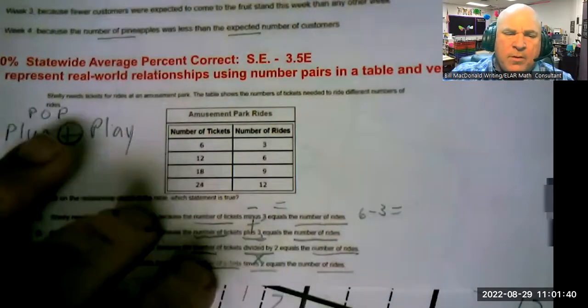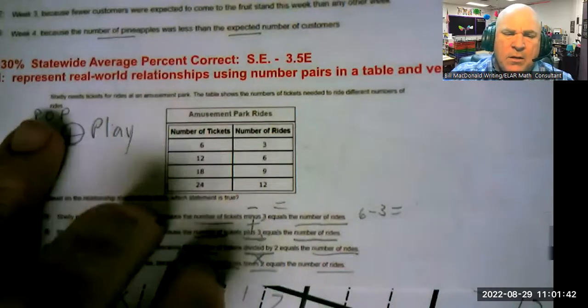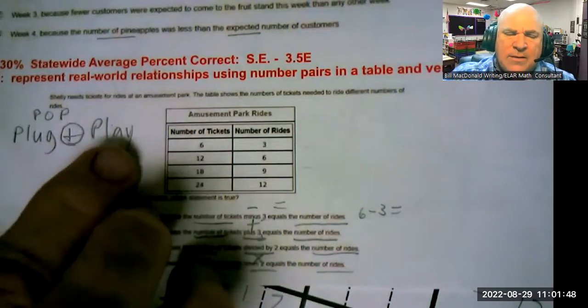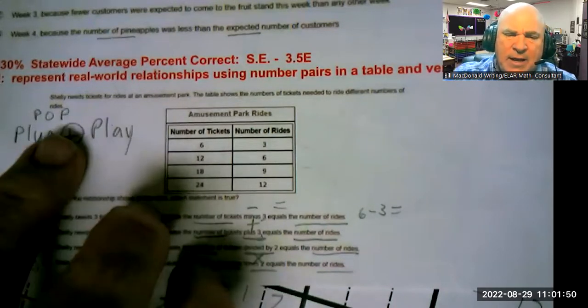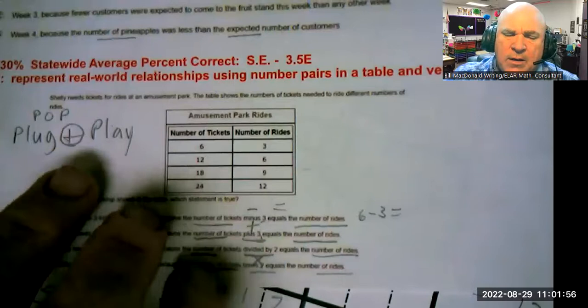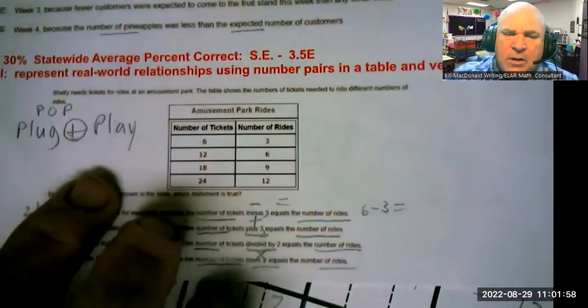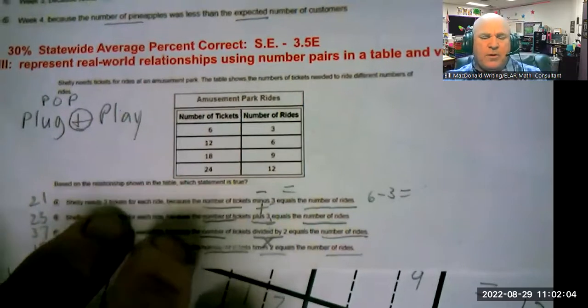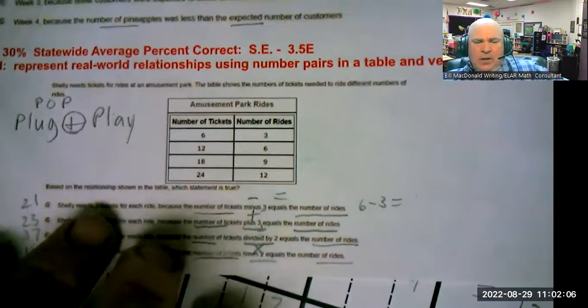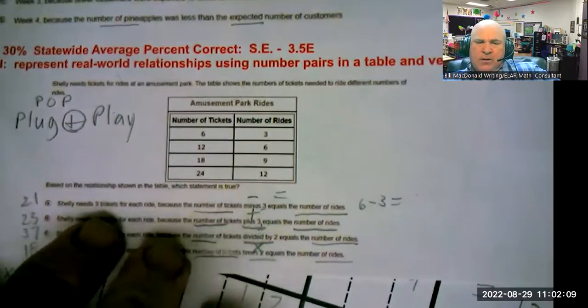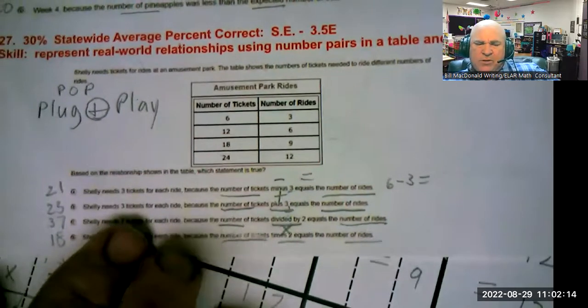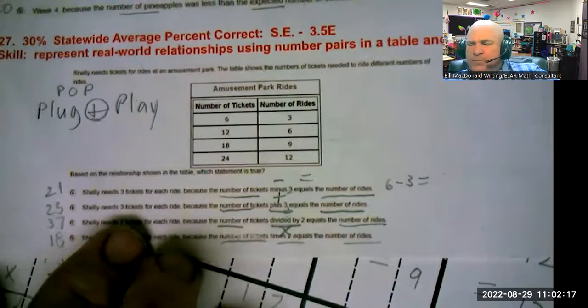Plug and play stands for POP which is plug, operation, and play. Even though I have a plus sign here it really means 'and'. Once you plug in the operation, plug in the key numbers and the operation that they ask you to do, then you'll be able to solve the problem. Because the kids did not have the endurance to plug and play four different answer choices, I'm going to suggest that you use my mathematics chart to do this.